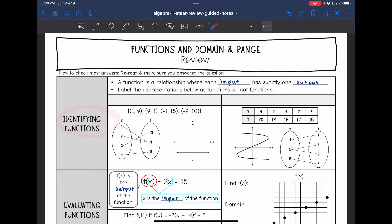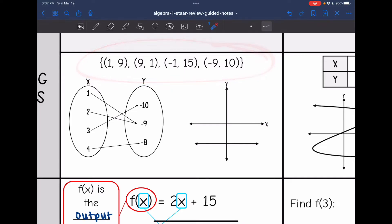So let's start with functions. Remember, a function is a relationship where each input has exactly one output. So we're going to label the representations below as functions or non-functions. Remember, functions don't have repeating x values because each input has exactly one output. So let's look at the ordered pairs here. These do not have repeating x values, so this one is a function.